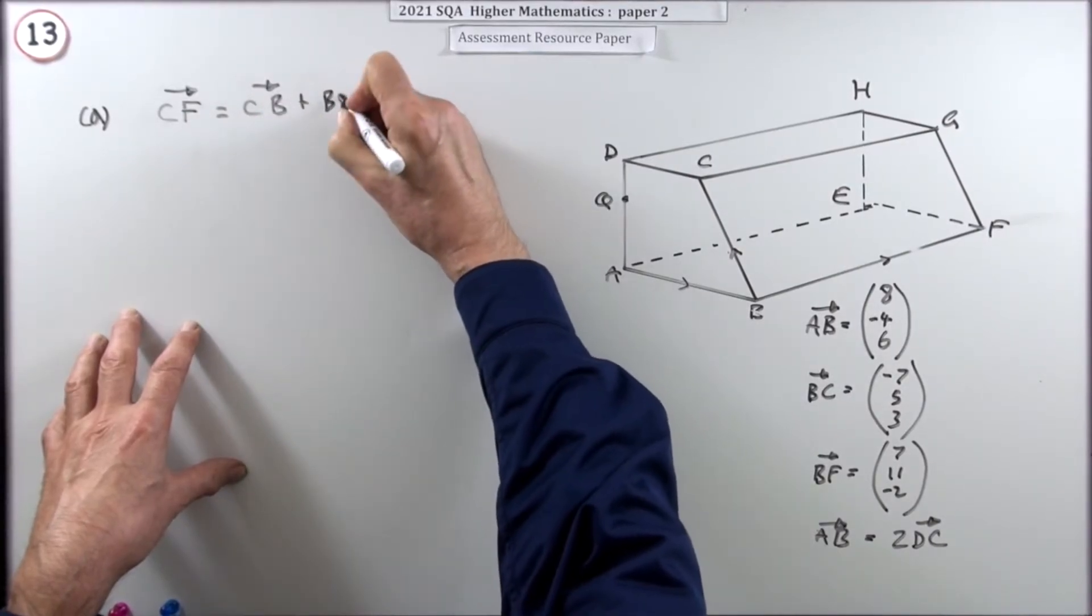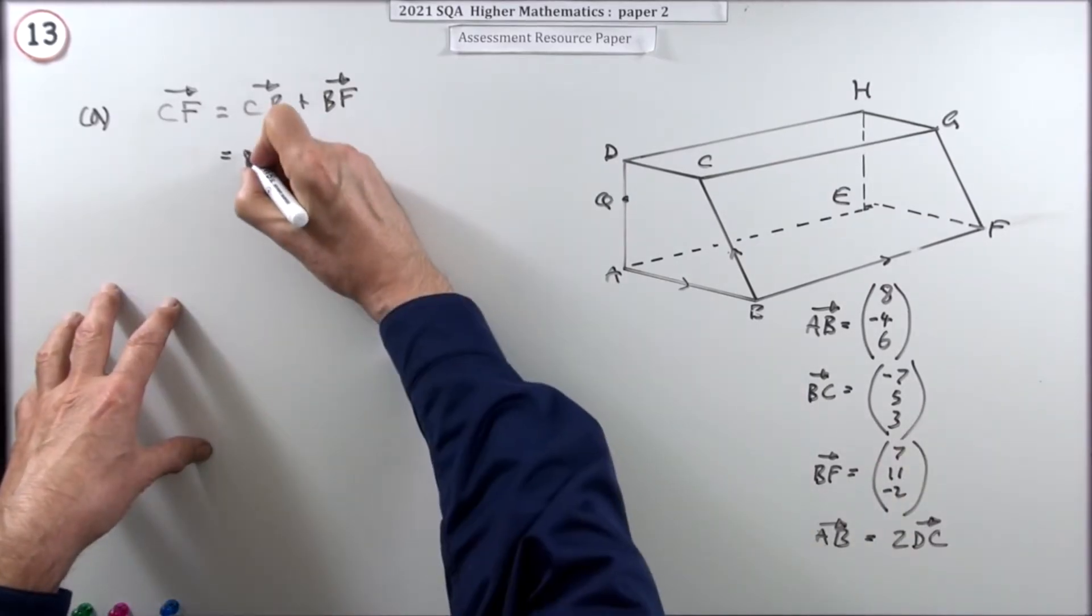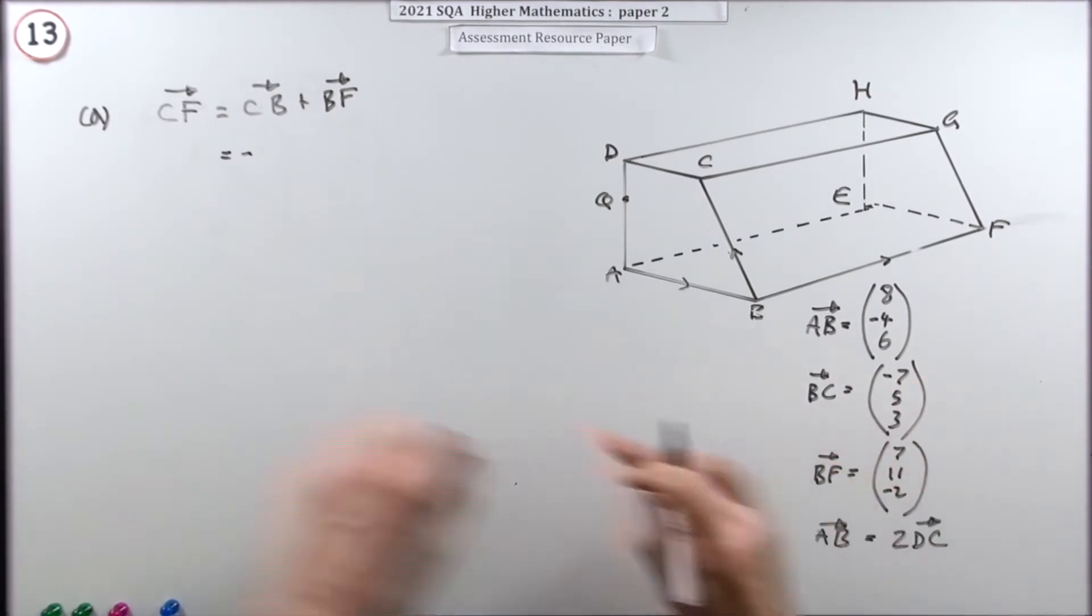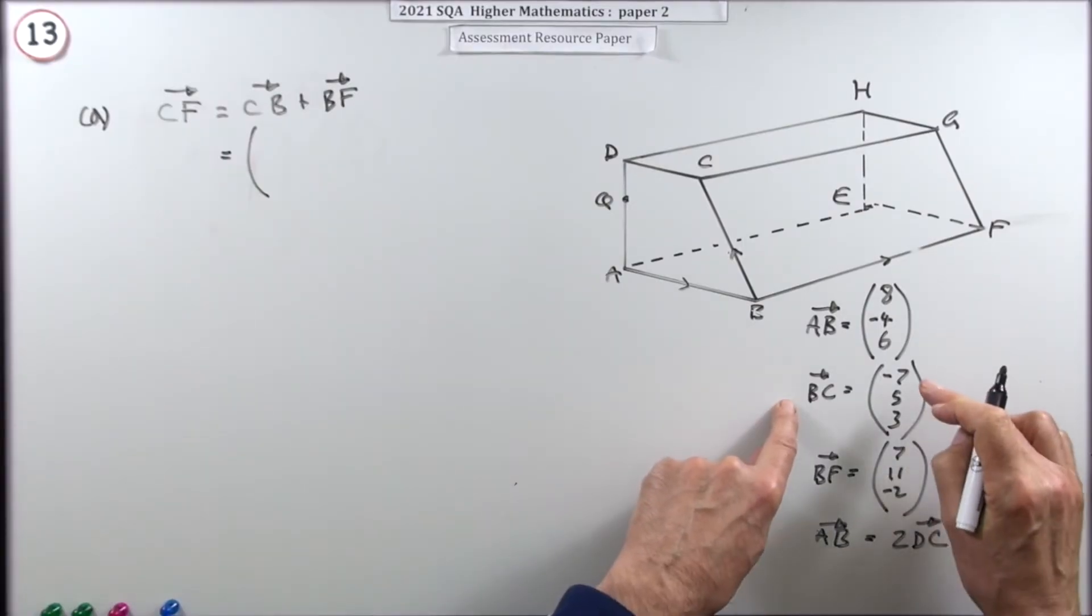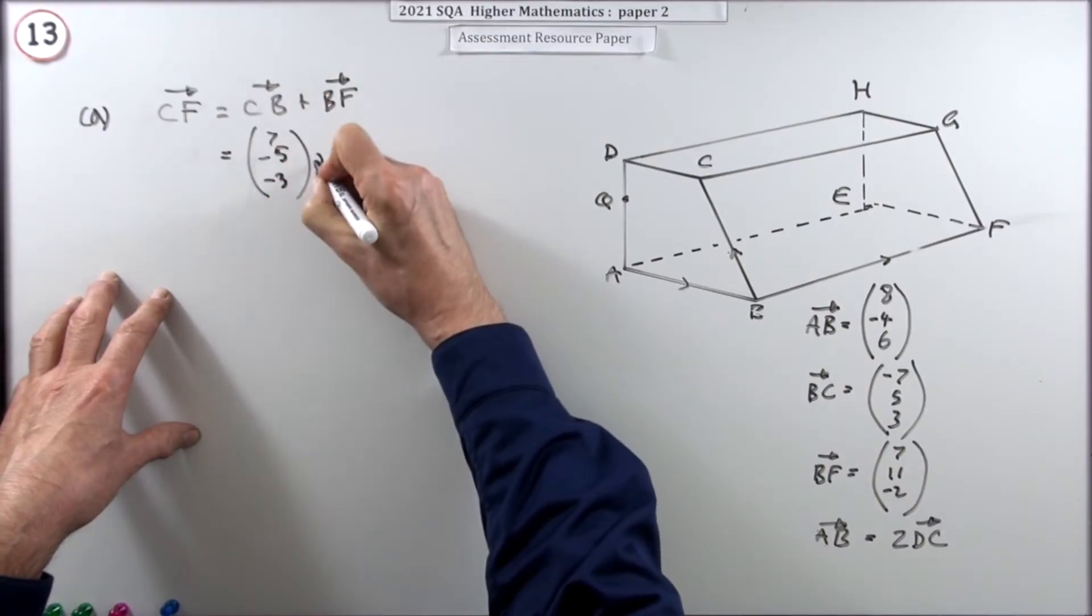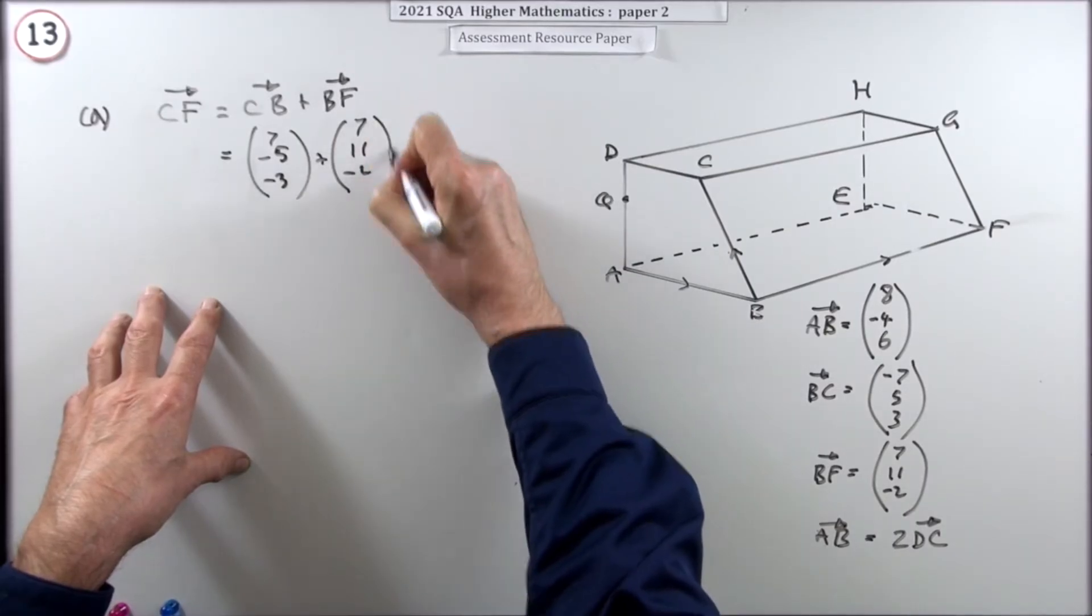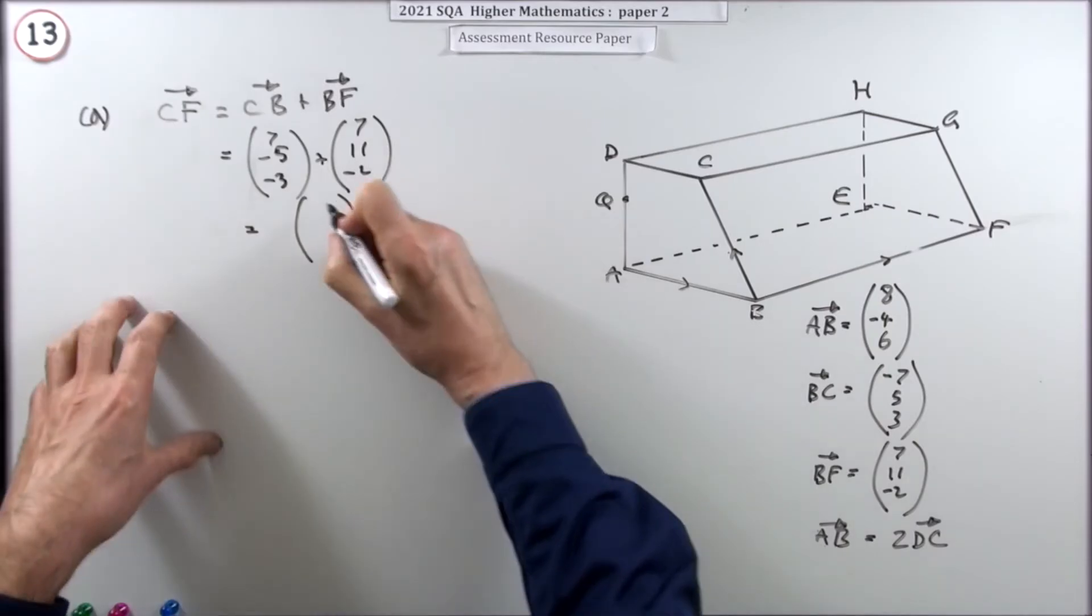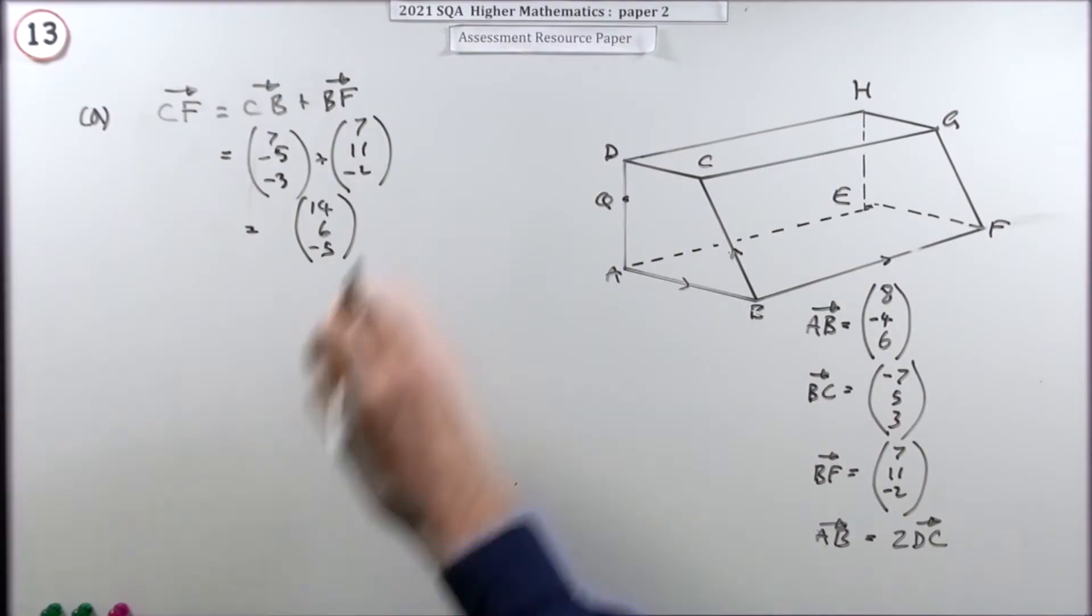I can go from C to B and then from B to F because C to B is just the opposite of that. I can either put negative of it or just go in and change them. Maybe I'll just go in and just change them because it's only the one mark. So it'll be the reverse of that. So it'll be 7, negative 5, negative 3. And onto that I add BF, which stays the same, 7, 11, negative 2. And then this will give me my answer. So that's going to be 14, that's going to be 6, and that's going to be negative 5. And there's the first mark.